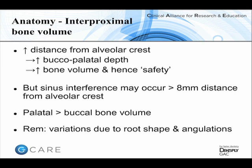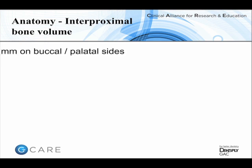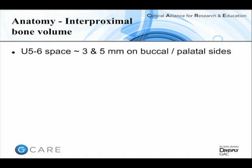Patients vary, so there are variations in the shape and angulation of individual teeth pre-treatment, which may affect space available between roots. On average, at the upper second bicuspid–first molar interproximal space — a fairly classical insertion site — on the buccal side there is usually about 3 mm of space between roots, while on the palatal side there is 5 mm because the molar has only a single palatal root. Allowing a quarter of a millimetre for the periodontal ligament on both sides effectively reduces available space by half a millimetre.